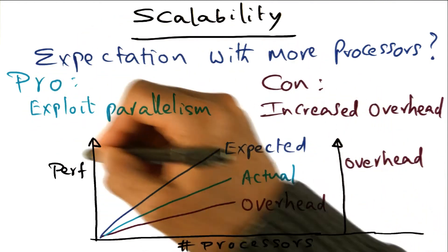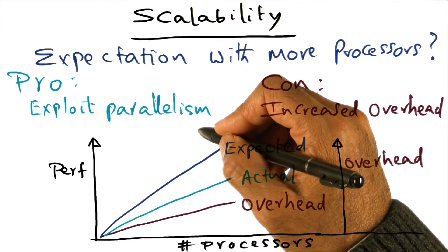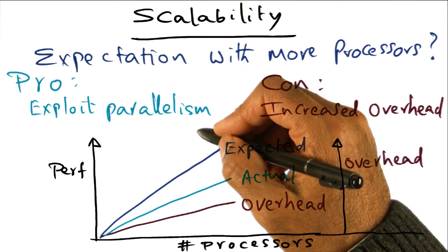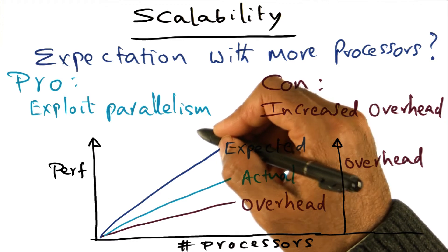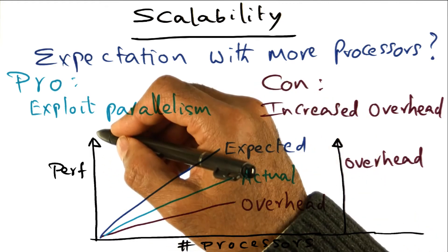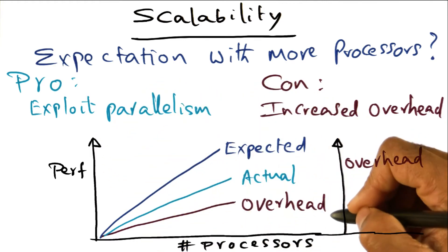What we are doing is exploiting the parallelism that is available both in the application — because we structured it that way — and in the hardware, in order to get increased performance as you increase the number of processes.